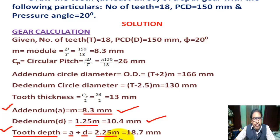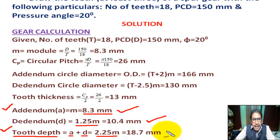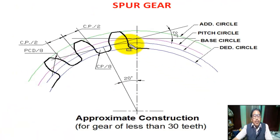Tooth depth = addendum + dedendum = 2.25 × m. Putting the value of m = 8.3 gives tooth depth ≈ 18.7 millimeter. Now we draw the spur gear teeth profile using the calculated parameters.